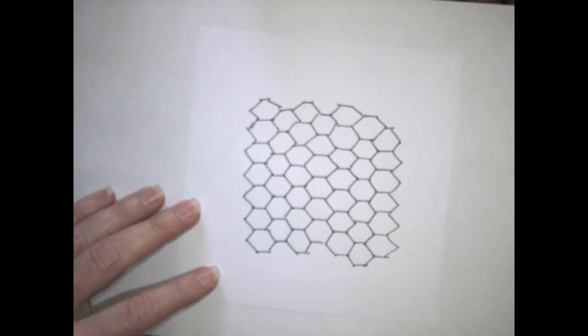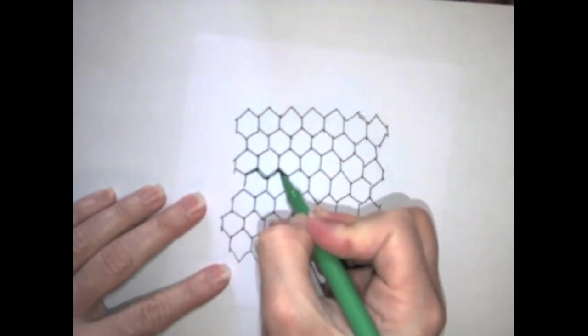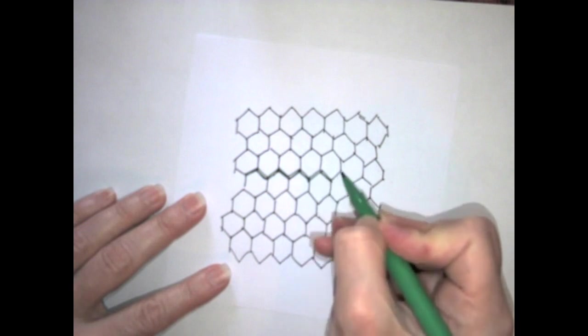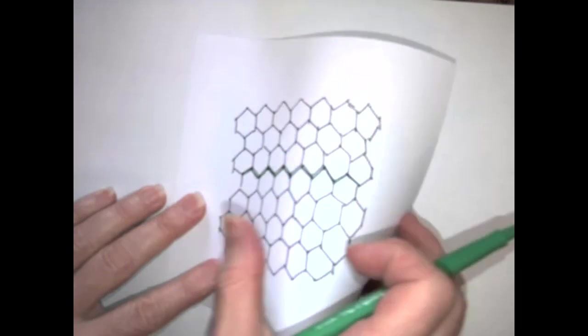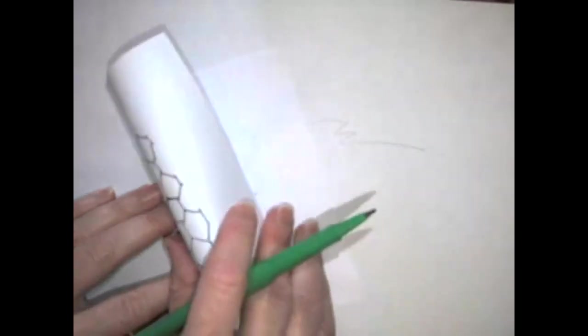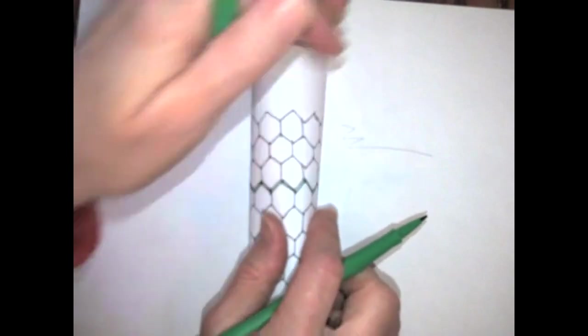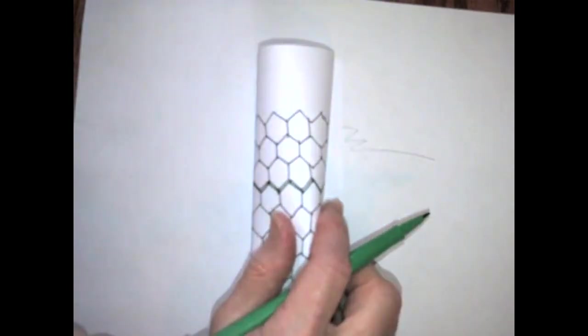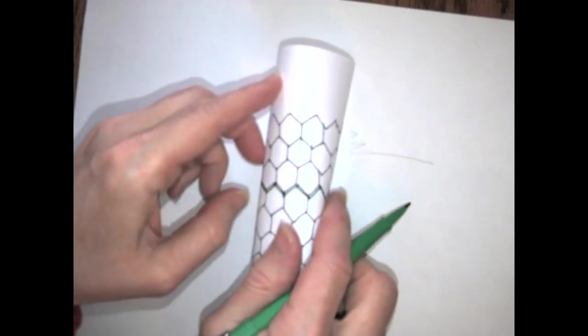Now we can take a closer look at the pattern of the hexagons. I'm going to use another color marker to highlight the zigzag pattern. So it's just going zigzag, zigzag, all the way across. And when I roll up this pattern to form a carbon nanotube, I'm going to connect those zigzags to each other to create the zigzag pattern of carbon nanotube.